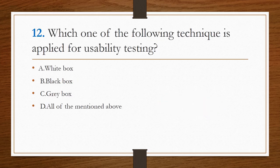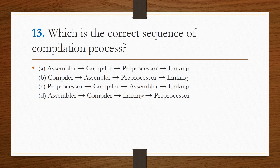Which one of the following technique is applied for usability testing? Option B is the right answer. Next question: which is the correct sequence of the compilation process? Option C is the right answer. The correct sequence is: preprocessor, then compiler, then assembler, and the last step is linking.